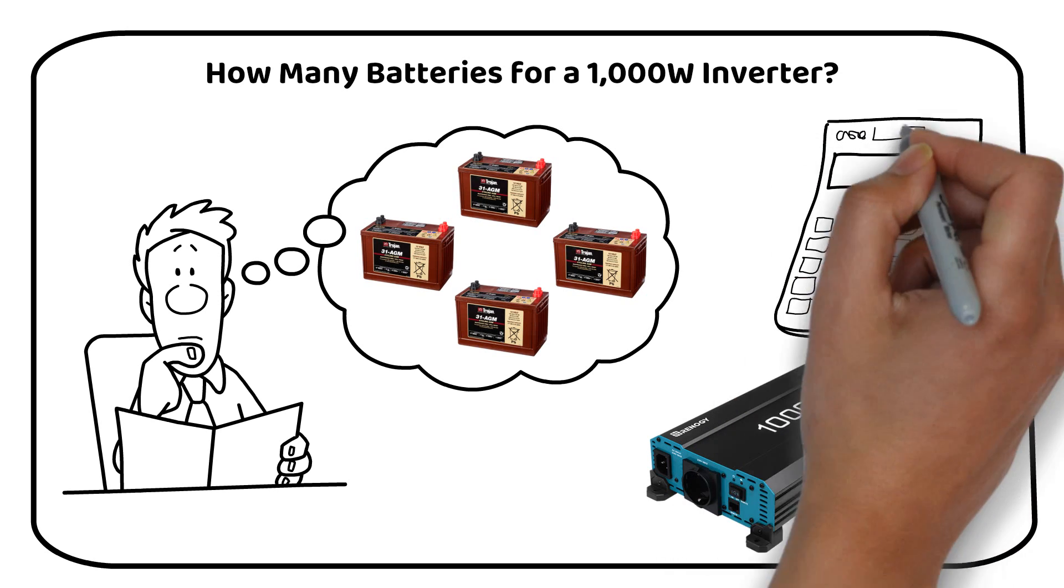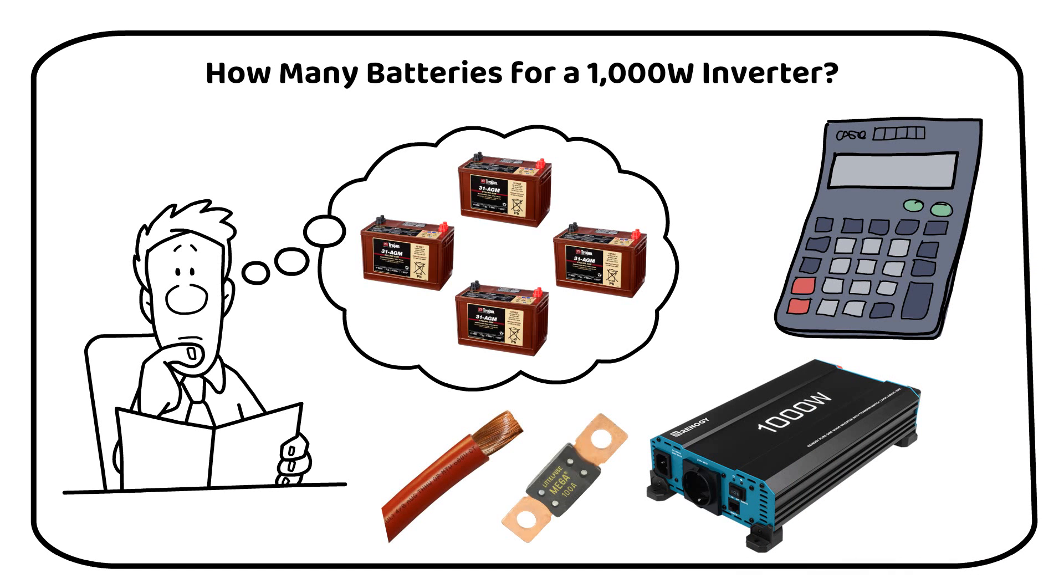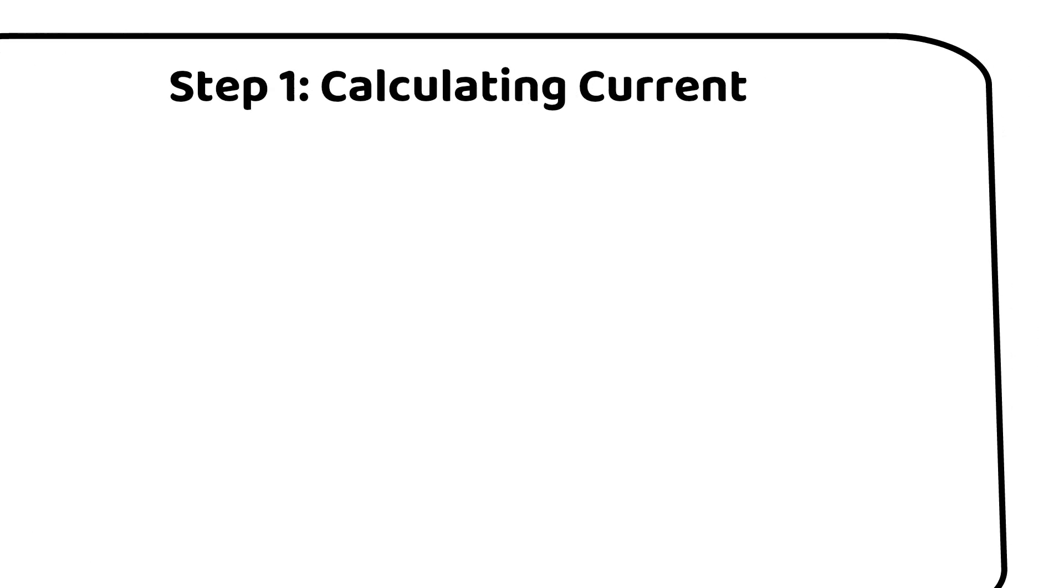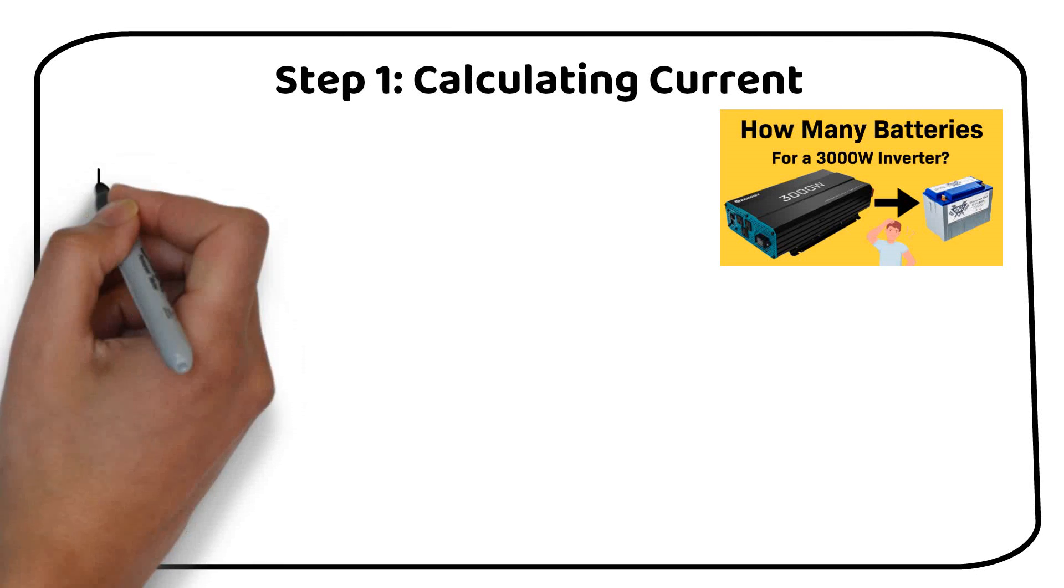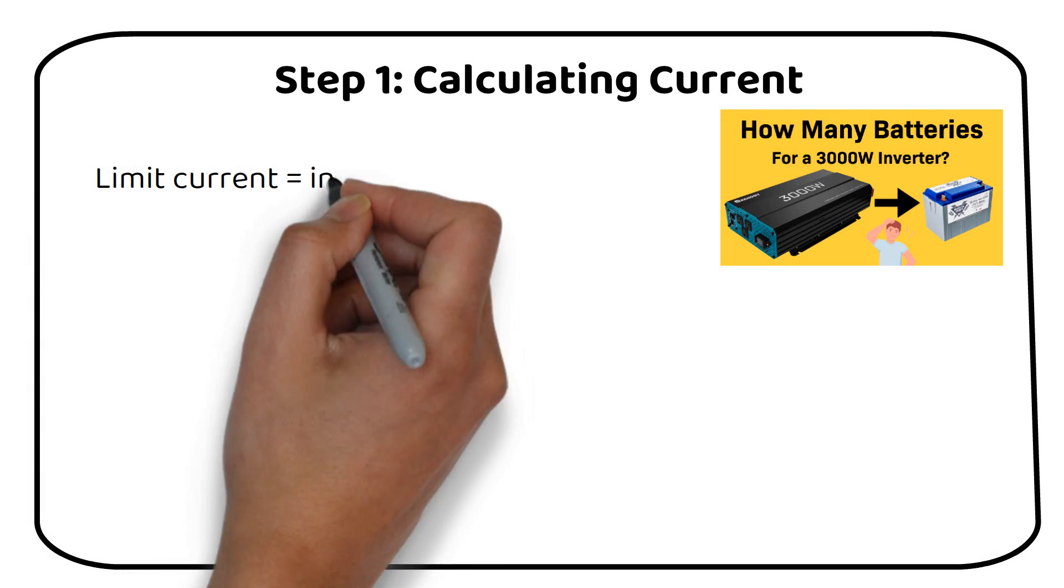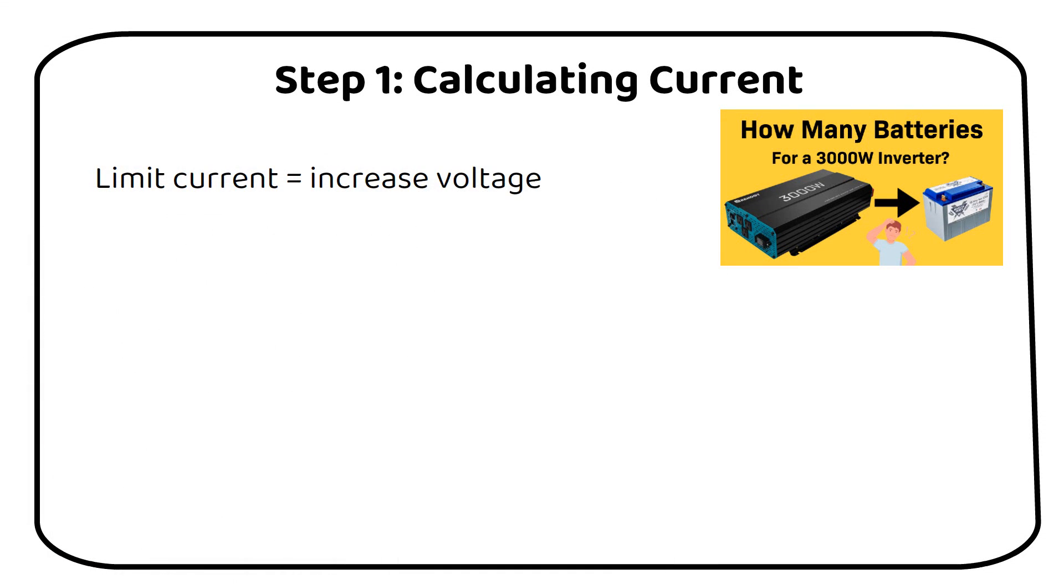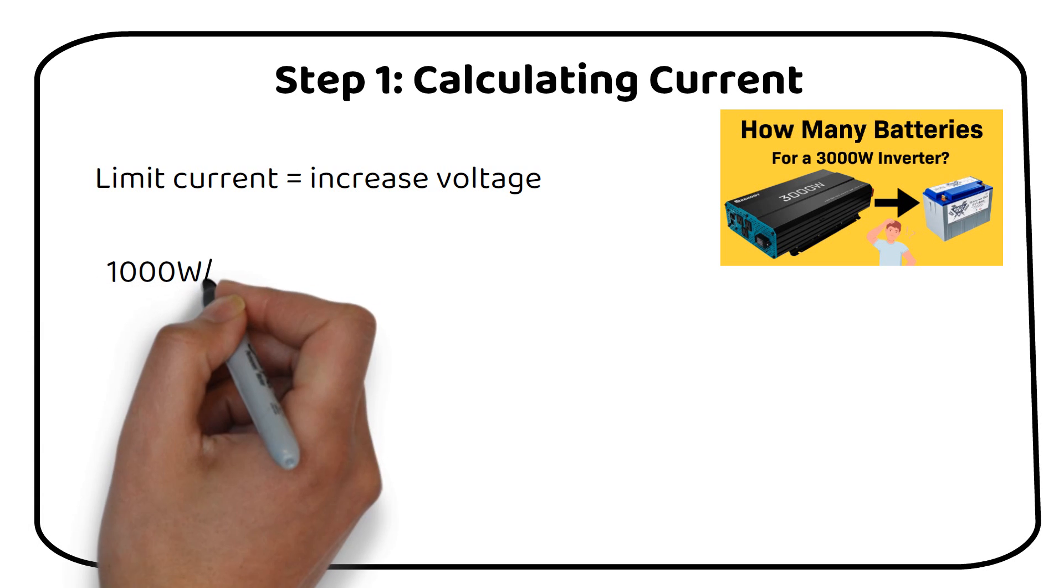I will also talk about the correct way to find out the wire and fuse size for this inverter. In my previous video about how many batteries you need for a 3000 watt inverter, we limited the current to 100 amps by increasing the battery's voltage. Let's find out if we have to do that again.